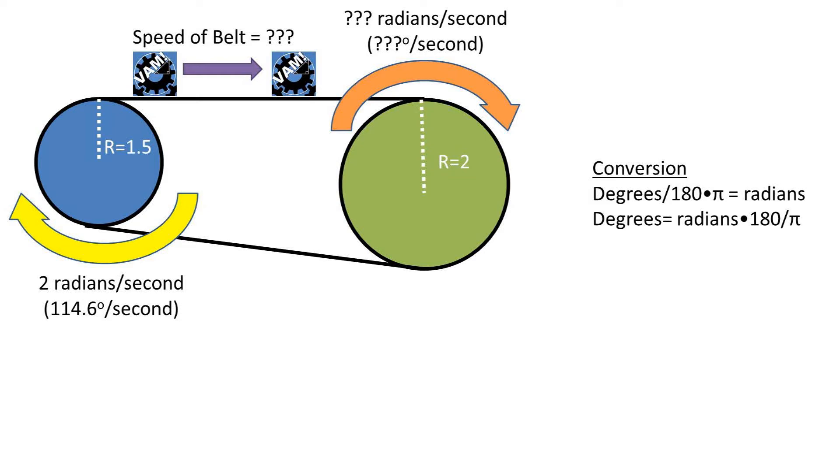In this problem, we have a conveyor belt that has a driver pulley, or roller, with a radius of 1.5 units.